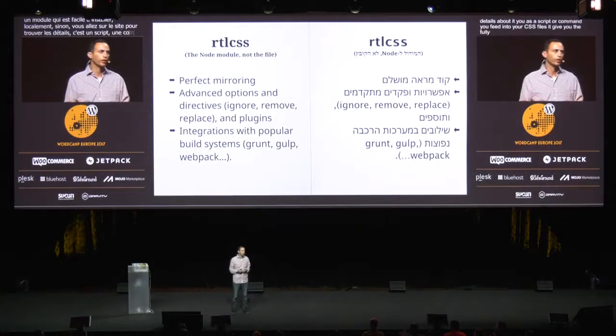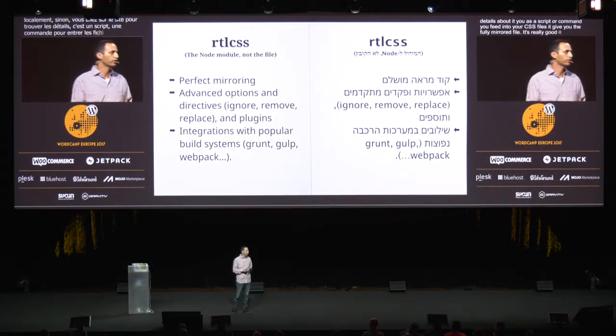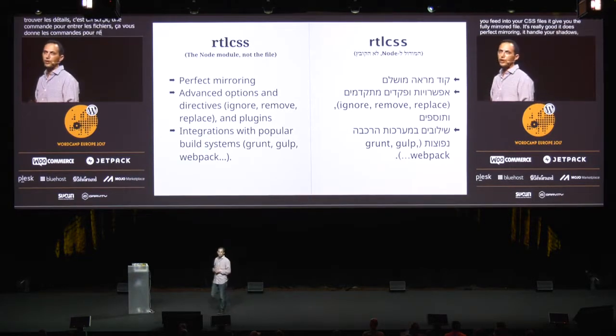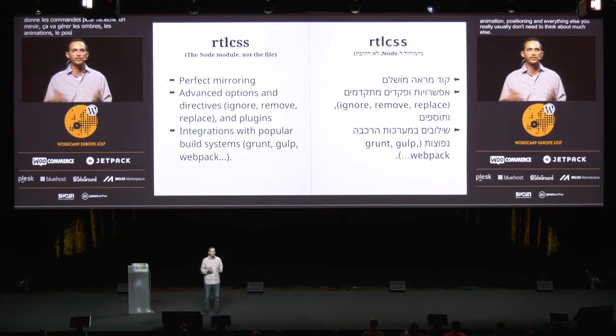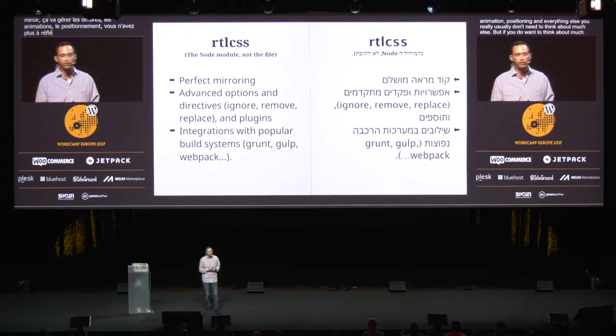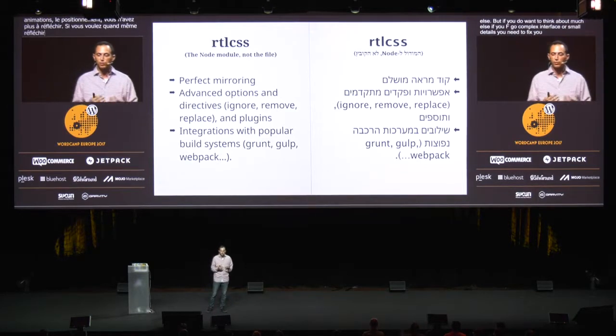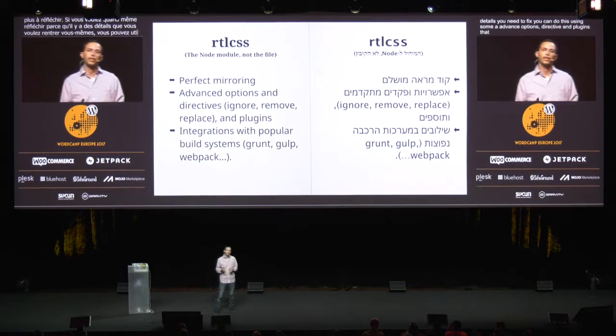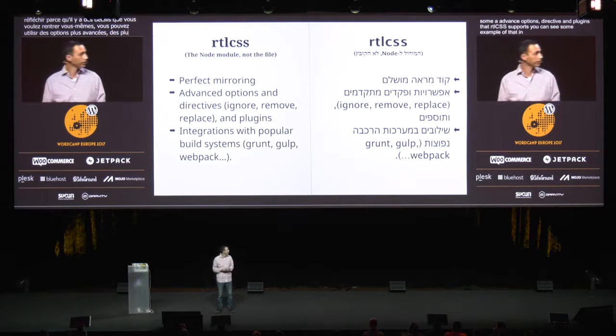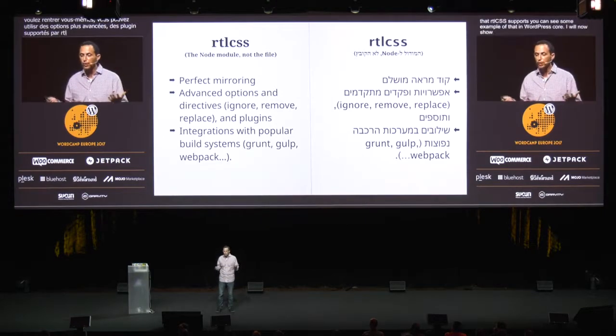It's just a script or command that you feed your CSS files to, and it gives you the fully mirrored files. It does perfect mirroring — it will handle your shadows, animations, positioning, and everything else, so you really usually don't need to think about much else. But if you've got some complex interface or small details you need to fix, you can do this using advanced options, directives, and plugins that RTLCSS supports. You can see examples of that in WordPress core. And of course, it integrates with popular build systems — which is basically my goal: to get everybody to integrate this in their build system so that they do it once and then don't have to think about RTL anymore.